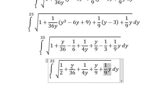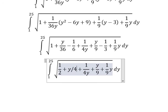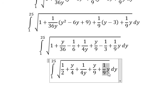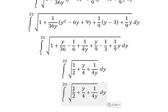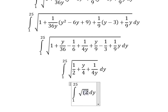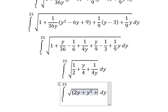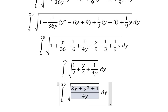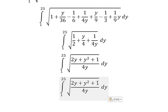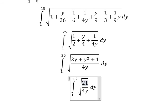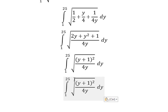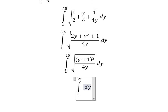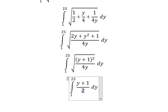We have y over 4. Now we do a common denominator, so we will have 2y plus y squared plus 1, all over 4y. This is a perfect square identity. Now we put everything outside the square root, so we will have y plus 1 over 2, times the square root of y.